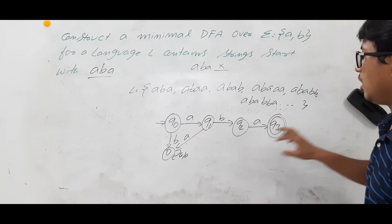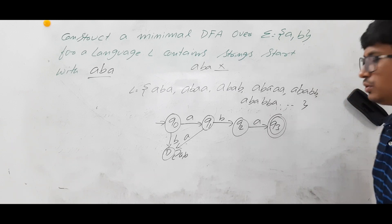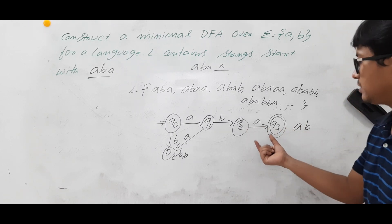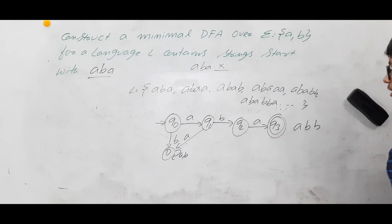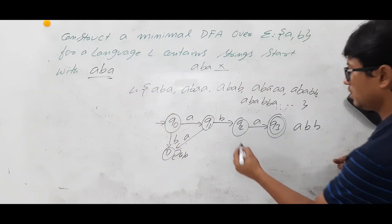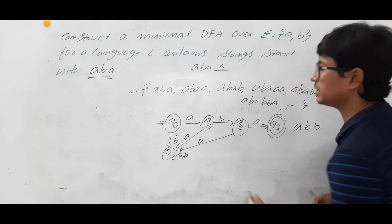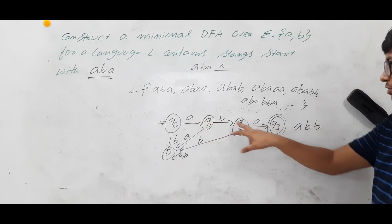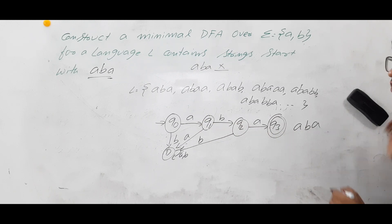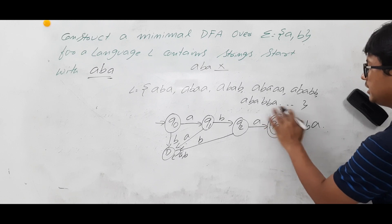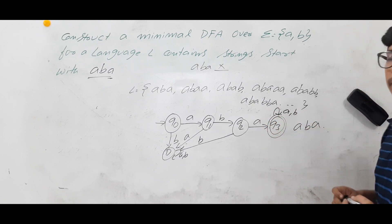From Q2 on B: we have already seen AB; the next character should be A to complete ABA. If B comes instead, the string starts with ABB, which is not ABA. So Q2 on B goes to dead state D. Now once you have started with ABA, anything can come after that — any number of A's or B's. So from Q3 on both A and B, we stay in Q3 itself.